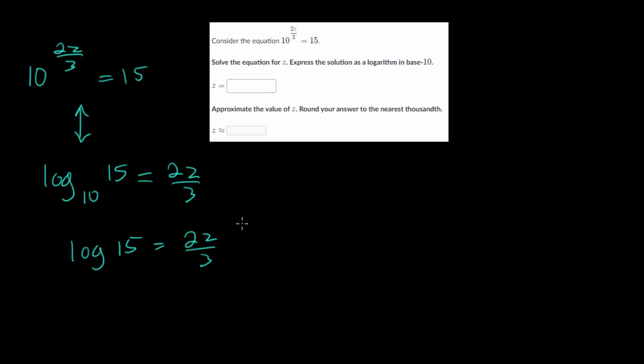So let's just say log 15 is equal to 2z over 3. And from here, we just need to solve for z. So let's change colors. Let's multiply each side by 3, and then divide each side by 2 to cancel out this 2 here.